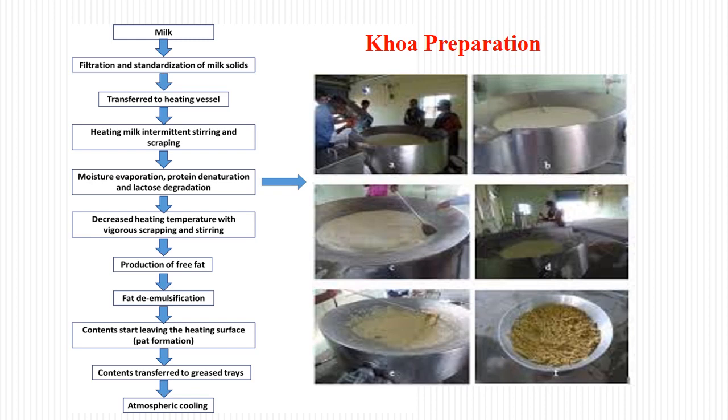When the mass stops sticking to the surface of the kadai or vessel, that is an indication we are going towards the final stage. At that point a pat or lump formation occurs and we should slowly reduce the heating and stop it. Finally the lump we get should be cooled and packed. In the right side picture we can see different stages: from the top left the initial stage, then the second stage, continuing through to the final stage F.